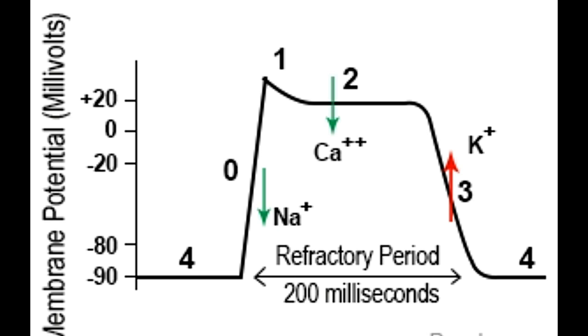Phase 1, partial repolarization. The sodium channels close and voltage-sensitive potassium channels open up, leading to an outward movement of K+ ions. This corrects the overshoot in membrane potential and reduces the value to about plus 20 to minus 10 millivolts.